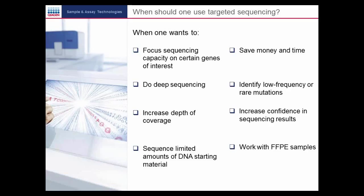And third, increase depth of coverage, which increases confidence in sequencing results. NGS has higher error rates compared to Sanger sequencing, so each base has to be sequenced many times in NGS, a parameter known as depth of coverage. The higher the depth of coverage, the more confident one is in sequencing results. This can be easily achieved with targeted sequencing.